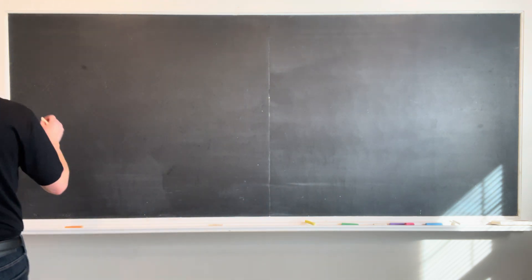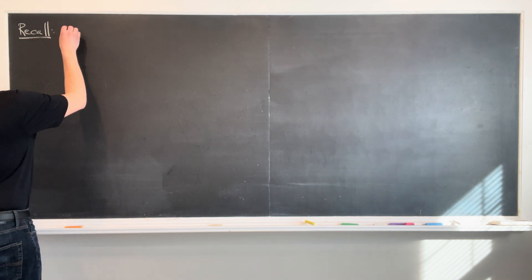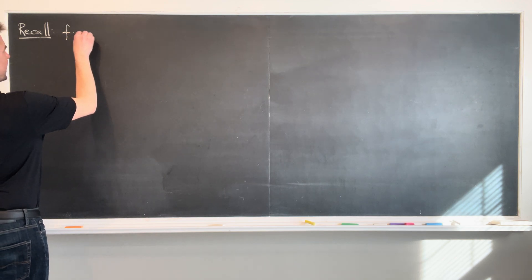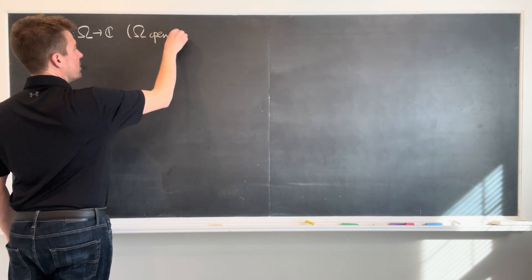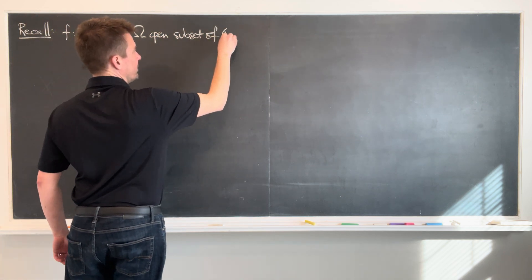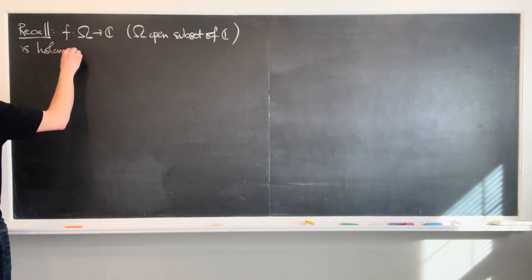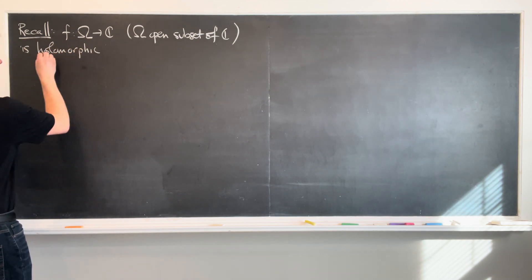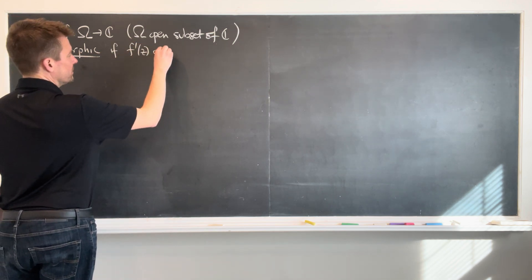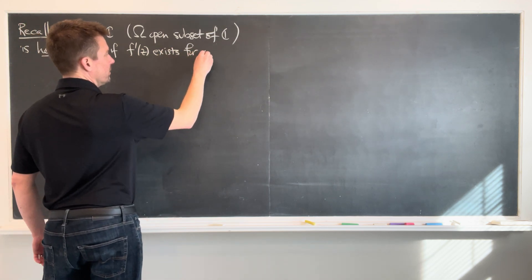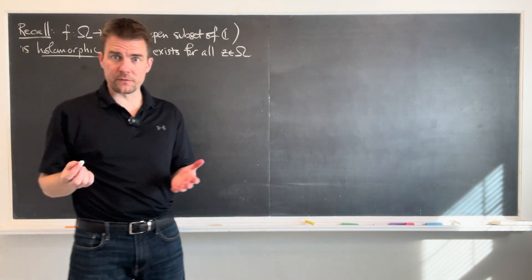All right, so let's recall a function f which maps a set omega into C, where omega is an open subset of C, is holomorphic if f prime of z exists for all z in omega. That's what it means to be holomorphic in omega.